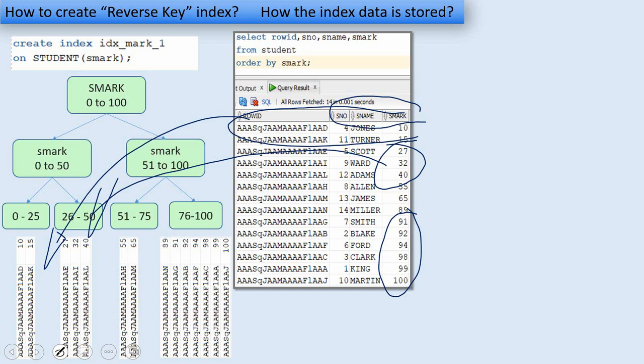So this creates the index block contention. This is the problem that reverse key index tries to address by just reversing the key value before storing the index. Let us see how to create the reverse key index now.